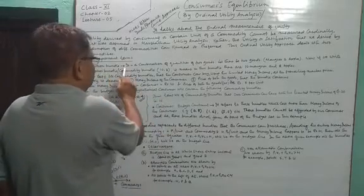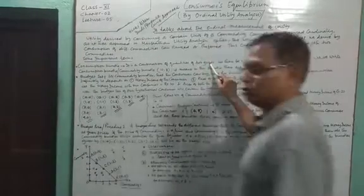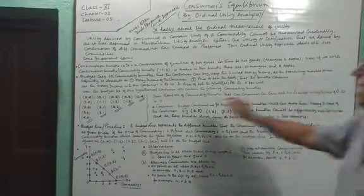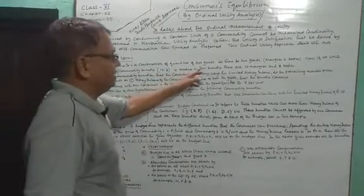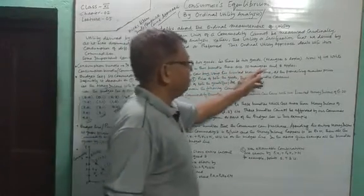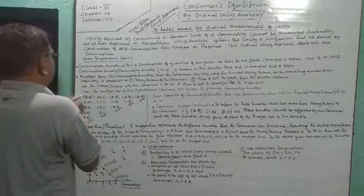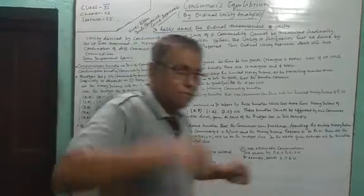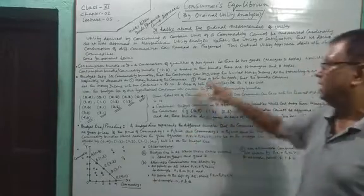A consumption bundle or commodity bundle is a combination of quantities of two goods. If we write commodity bundle (10, 8), it means 10 mangoes and 8 apples. The next concept is the budget set. Our consumer is having a limited money income, and the prices of mangoes and apples are given in the market.